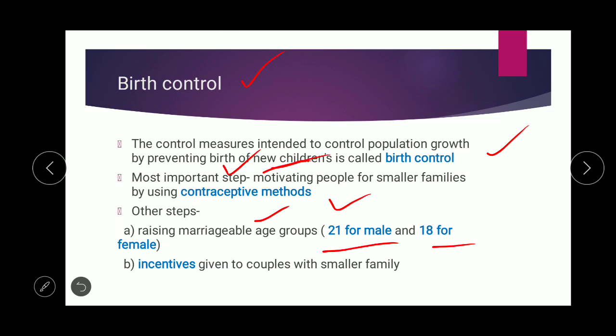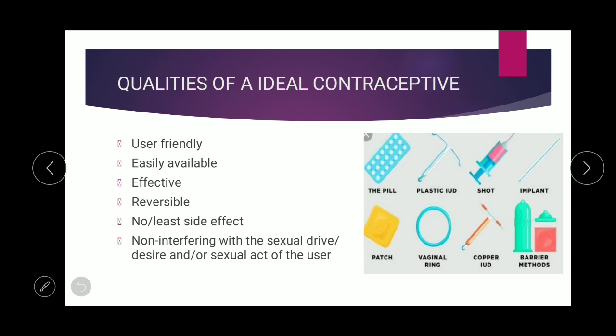Another step is incentives given to couples with smaller families. A green card is given to couples having only two children. Now the government is encouraging couples to have only one child, as two children is also contributing to population explosion. So birth control can be achieved using contraceptive methods.